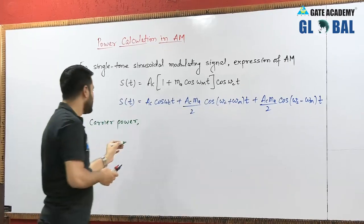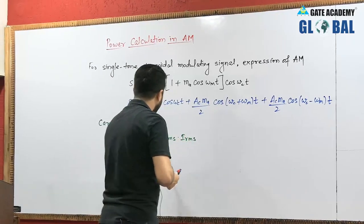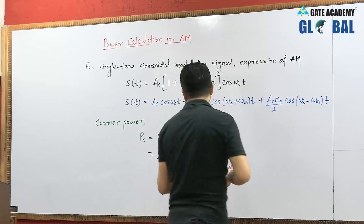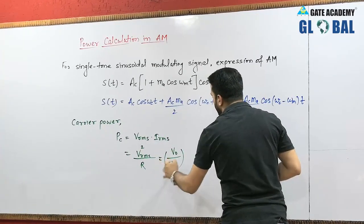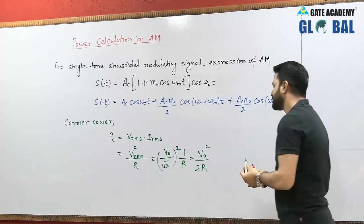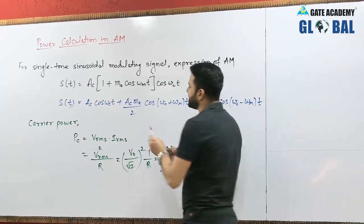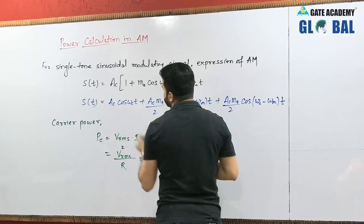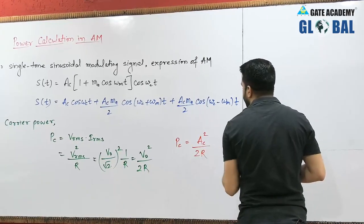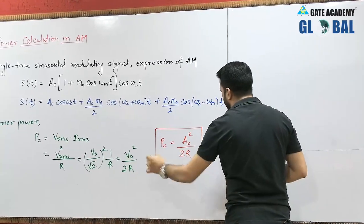Power is calculated as V_rms × I_rms, or V_rms² / R, which in terms of peak amplitude is (V₀/√2)² / R = V₀² / 2R. In this case the peak amplitude is AC, so the carrier power is PC = AC² / 2R. If resistance is not given, we take R = 1 ohm.